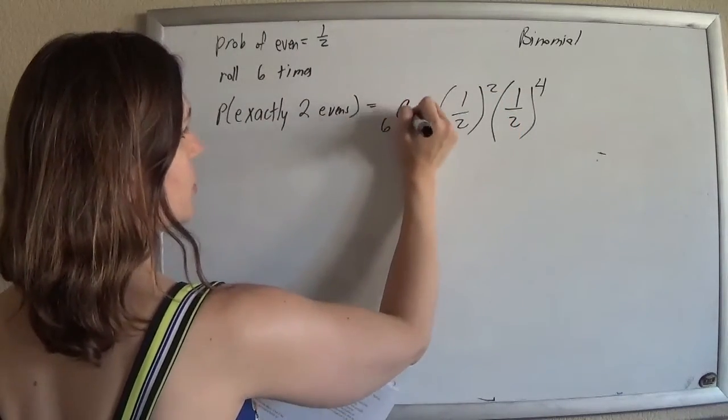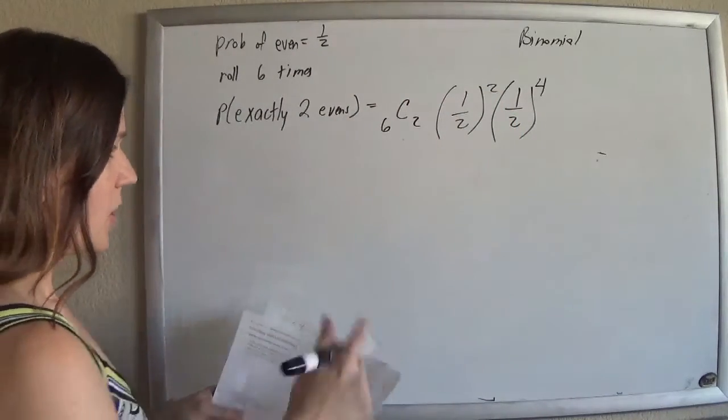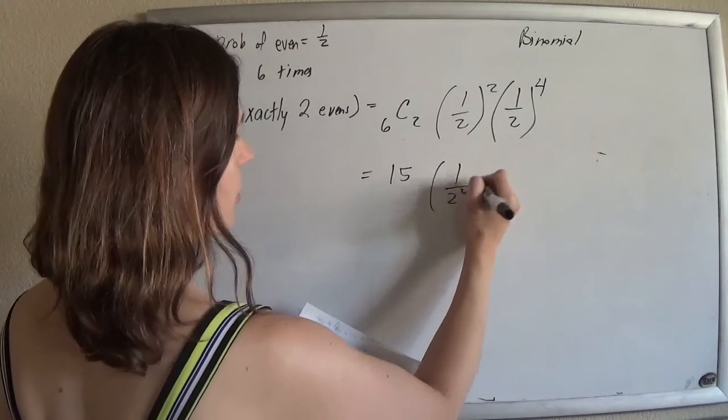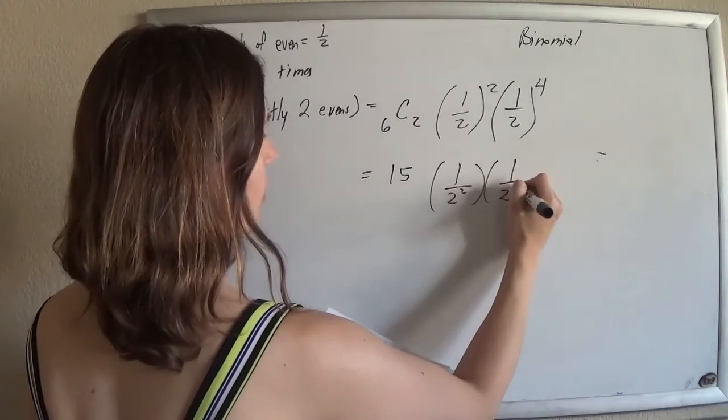Well, six choose two times. So that's going to be 15 times 1 over 2 squared times 1 over 2 to the fourth.